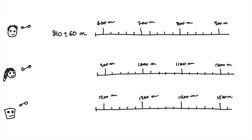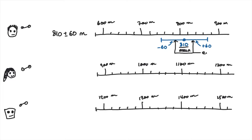To represent this in a graph, Baba draws a filled-in circle at the average value of 810 meters. To draw the error bars, he draws a solid line 60 meters away from the average with a tick at each end. This reaches a maximum of 870 meters and a minimum of 750 meters. Even though these are not exact measurements, they represent the data well.